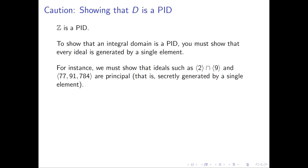Every ideal of the integers is of the form nℤ — that is true and is what we'll prove. But before knowing that, I have to think about all types of strange examples, such as the ideal generated by 2 intersected with the ideal generated by 9, which happens to be the ideal generated by some other number. Or consider an ideal with three generators: the ideal generated by 77, 91, and 784. I'm thinking of it as generated by three things, but if I chose some other element of that ideal, I could eliminate some generators and think of it as generated by a single element.